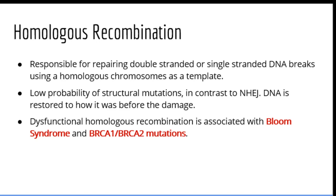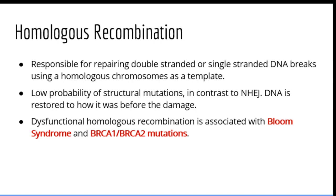While this method is very effective, it requires that the homologous chromosome is fully intact. Syndromes associated with problems with homologous recombination include Bloom syndrome and breast-ovarian cancer syndromes — specifically BRCA1 and BRCA2. The BRCA1 and BRCA2 genes produce proteins believed to be associated with the homologous recombination system of DNA repair.